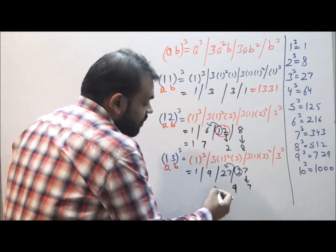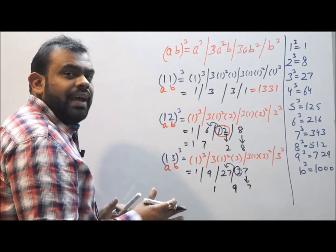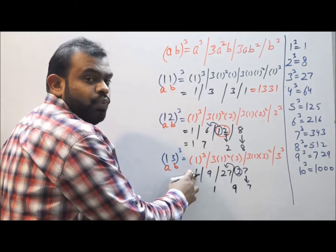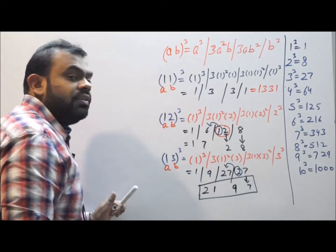9 + 2 is 11, which is having the unit digit as 1. Now the leftover part, that is 1, will be added over here, and 1 + 1 becomes 2. So the answer becomes 2197.